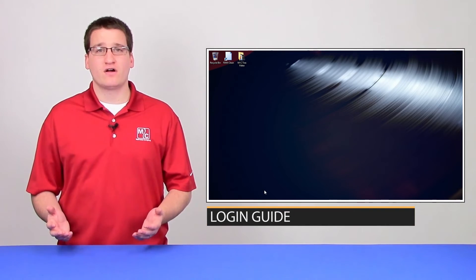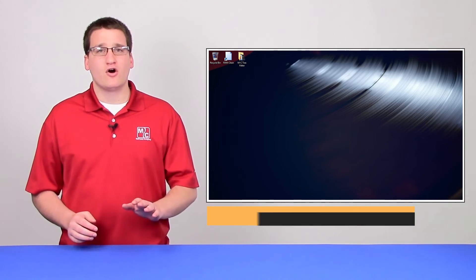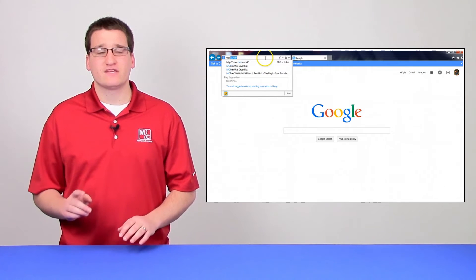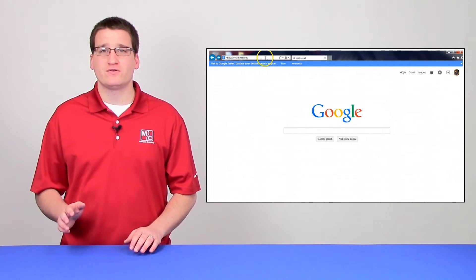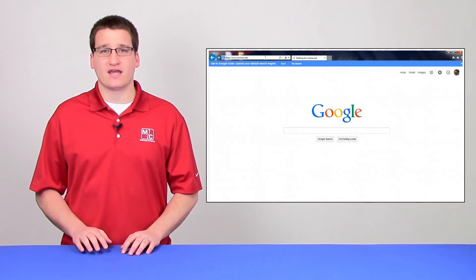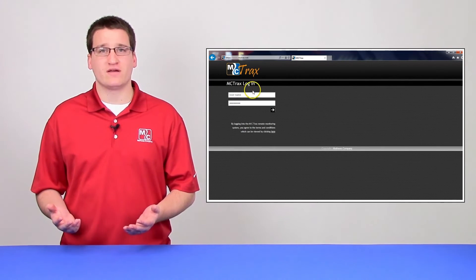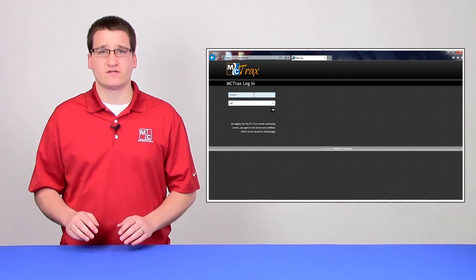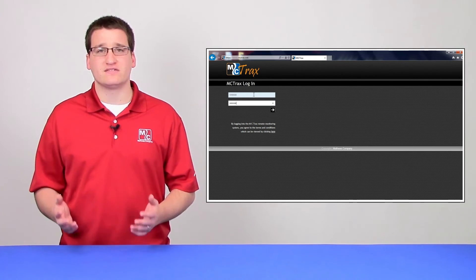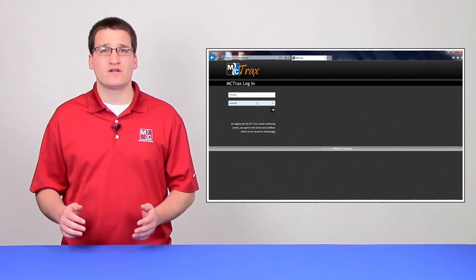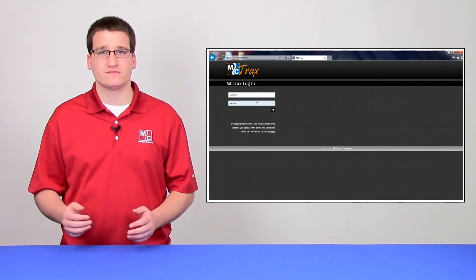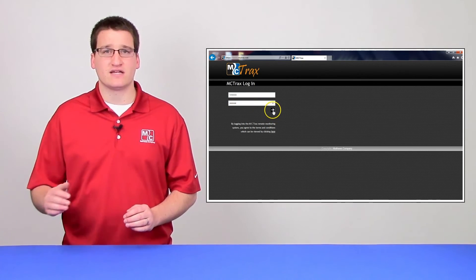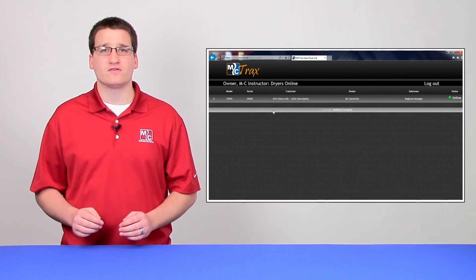Now that we've hooked up all the hardware, let's take a look at how we log in. Open up the browser of your choice from any computer or smart device. In the address bar, type in www.mctracks.net. This will bring up the homepage for MC Tracks. There are two lines here, one for username and one for password. Your username is the serial number for your dryer, and the password is your model number of your dryer. If you're unsure what either of these values should be, check your instructions. It's listed on the bottom. Click the arrow to log in.